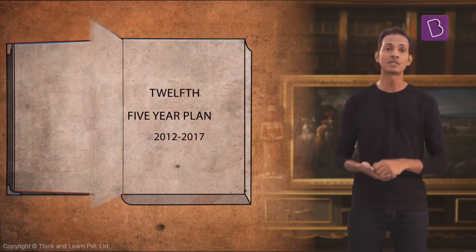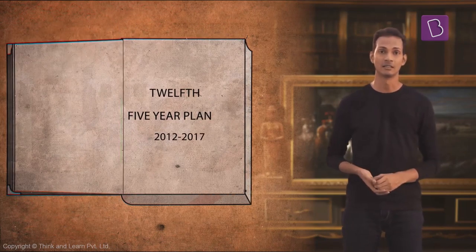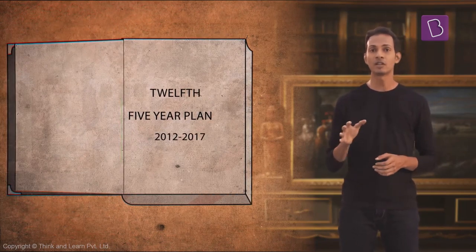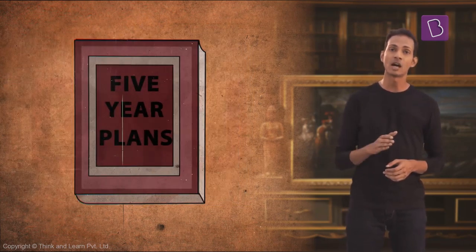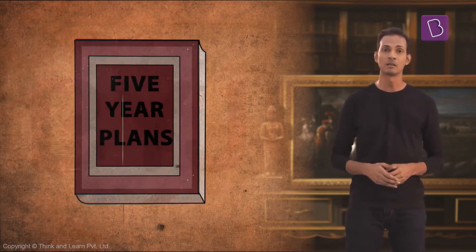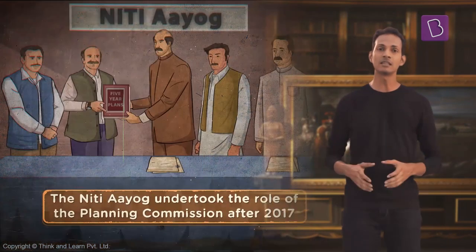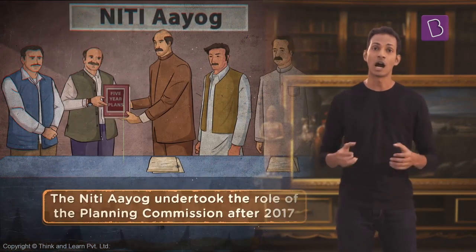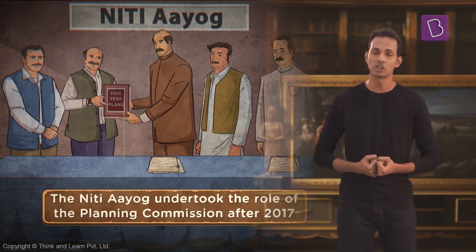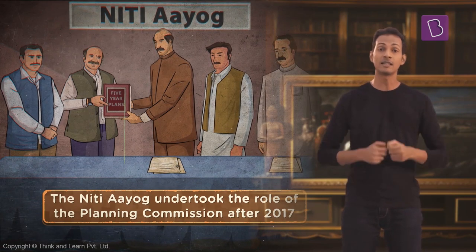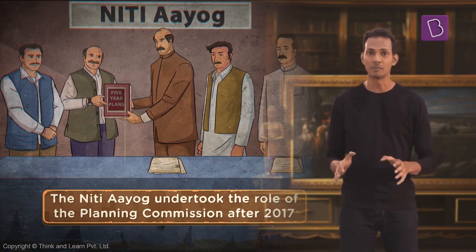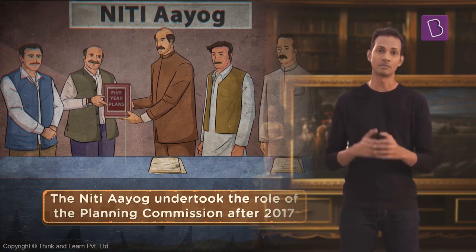More such five-year plans continued to take shape till 2017. The 12th five-year plan was the last plan carried out by the Planning Commission. The NITI Aayog undertook the role of the Planning Commission after 2017, and gave policy-based guide maps to the government.